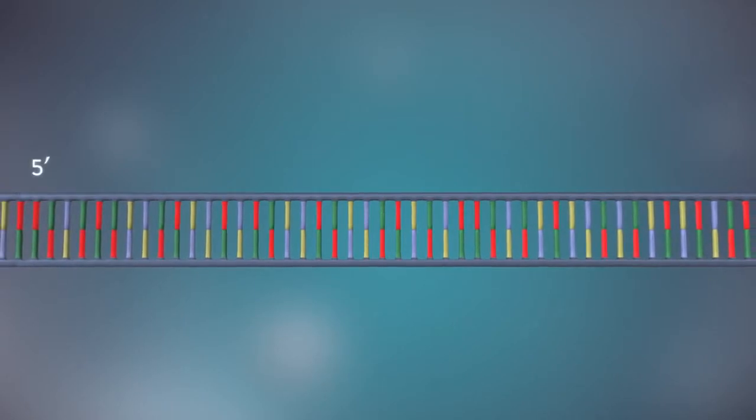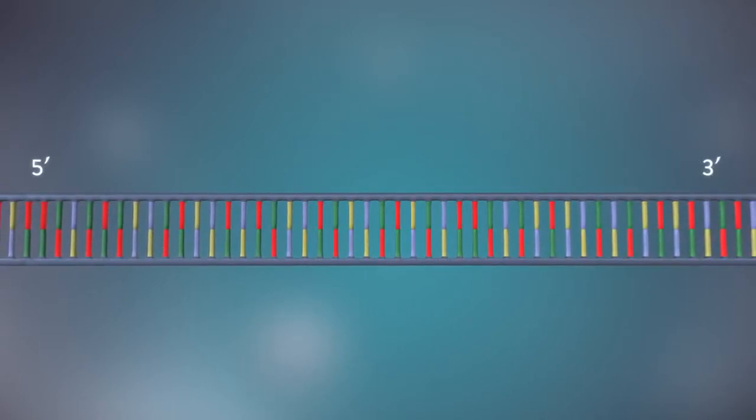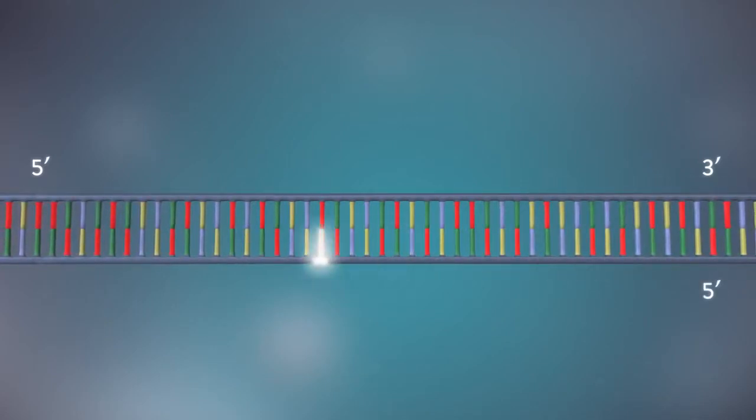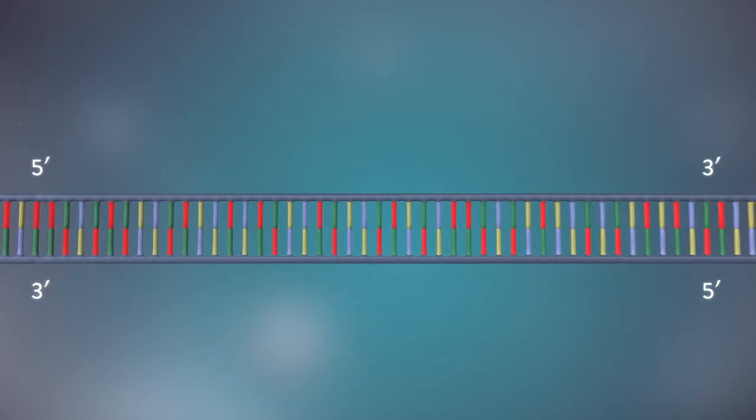Each strand has a 5' end and a 3' end. The two strands run in opposite directions. This determines how each strand of DNA is replicated.